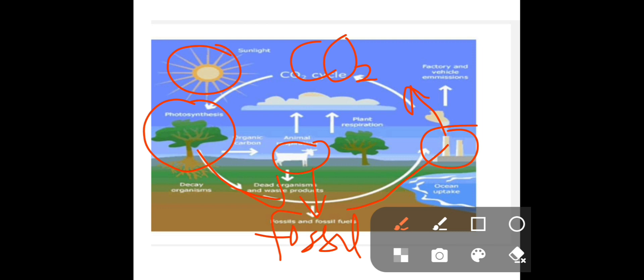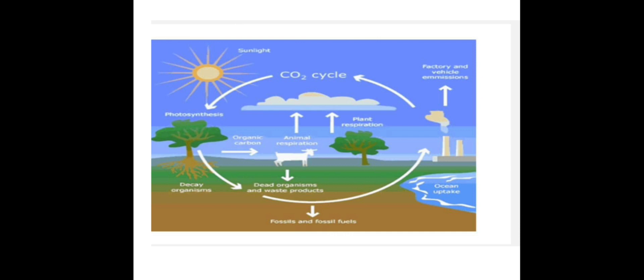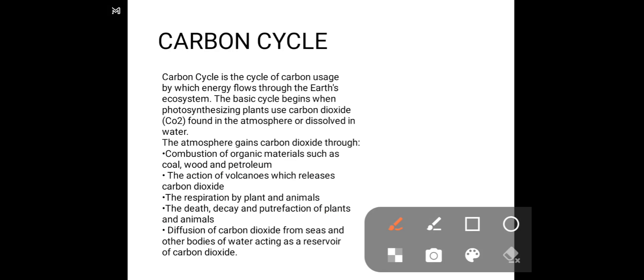We animals also breathe out carbon dioxide into the atmosphere. At the end of the day, carbon dioxide gets deposited into the atmosphere, and the process can start again when plants pick up this carbon dioxide in the process of photosynthesis. That's pretty much the whole backbone behind the carbon cycle.